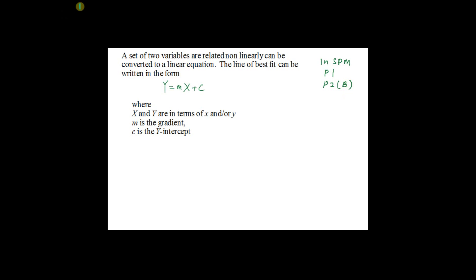So what is linear law? Basically, if you have a set of two variables which are related non-linearly, this can be converted to a linear equation. This non-linear equation can be transformed to a linear equation in the form of big Y equal to m big X plus c, where your X and Y are in terms of x and y.